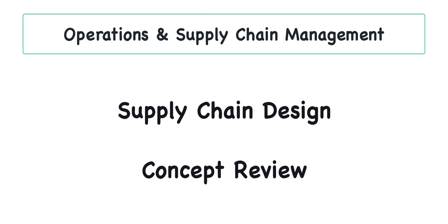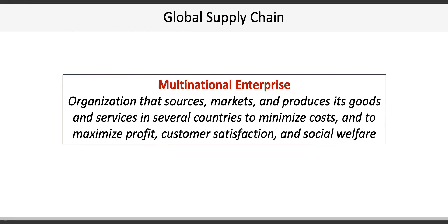The first concept in Chapter 6 discusses global supply chains. While not every organization operates directly in a global environment, virtually all organizations, and ultimately all of us, are indirectly affected by global supply chains and multinational enterprises that source, market, and produce goods and services in several countries to minimize costs, maximize profit, customer satisfaction, and social welfare.